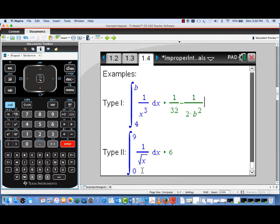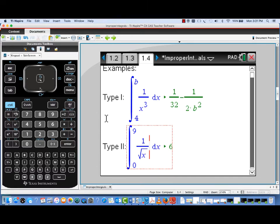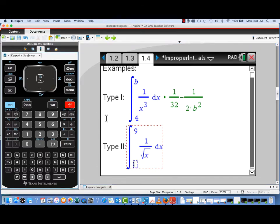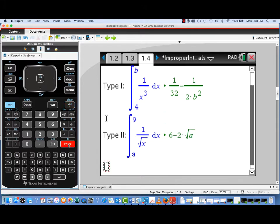Let's look at this Type 2 improper integral. Here the offensive limit is that 0, because 1 over the square root of x will be undefined there. So what we're going to do is replace 0 by a, and see what the TI-Inspire does with this in terms of a.